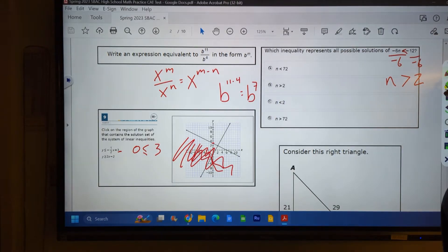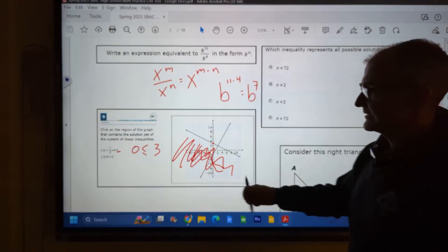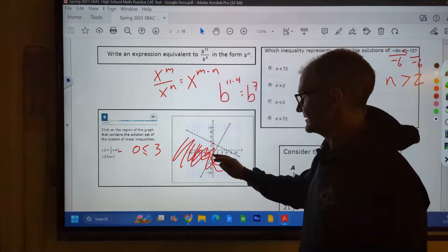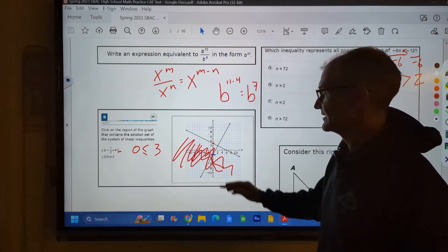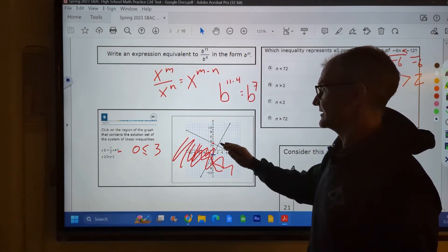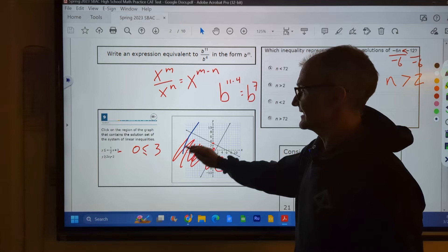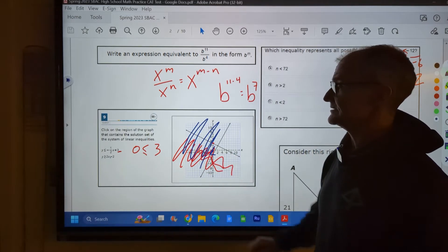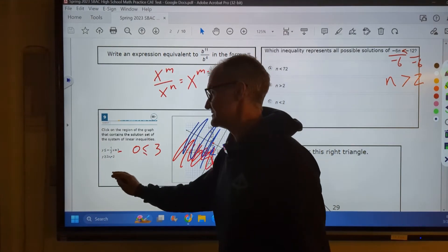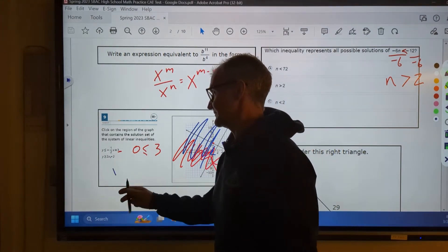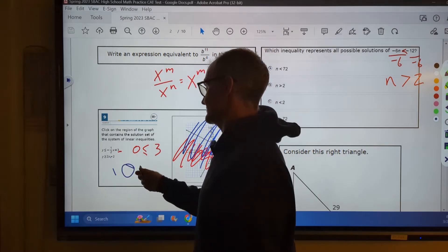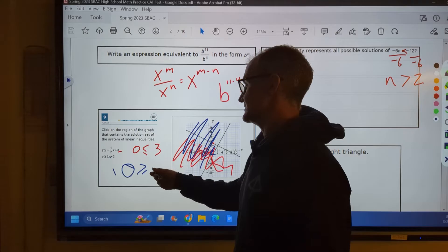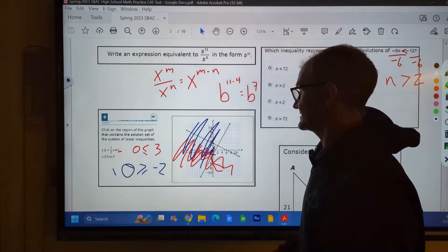And then the other graph, y is greater than or equal to 2x minus 2. That's this line right here with the y-intercept of negative 2. From there, rise 2 run 1. Rise 2 run 1. It is greater than or equal to that. So it's everything above it. Same thing. Here's a point right here. 0, 0. I'll try that in my solution set. 0 is greater than or equal to 0 times 2, 0 minus 2. Is 0 greater than or equal to negative 2? Yes, it is. So I shaded that correctly.